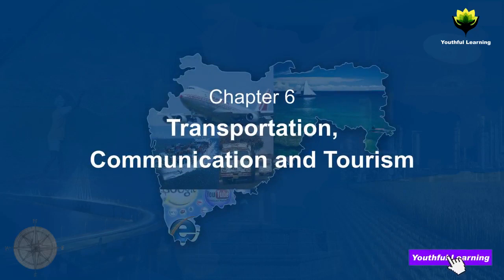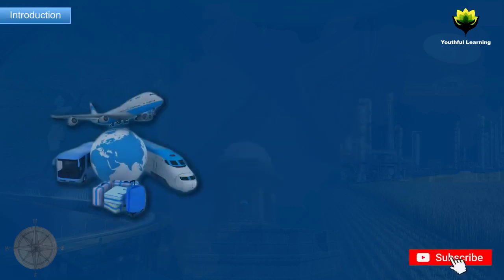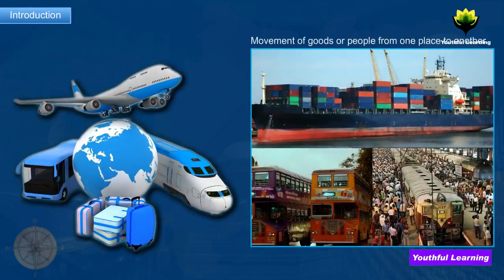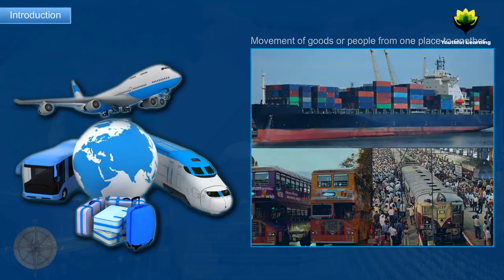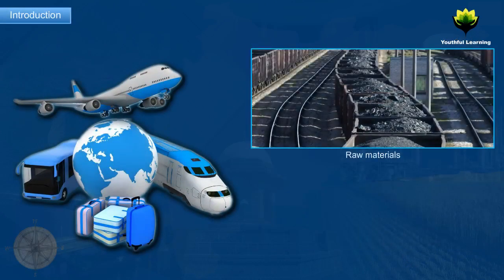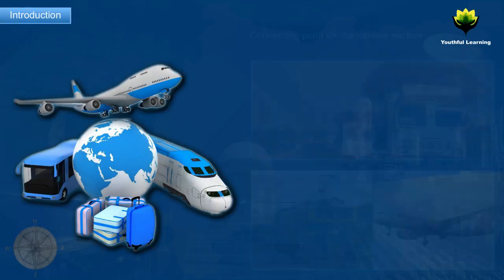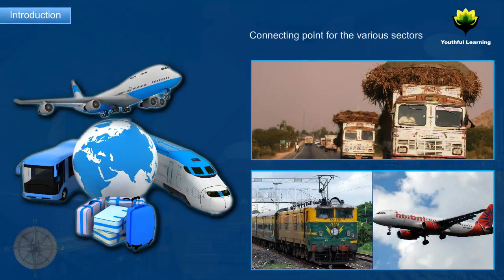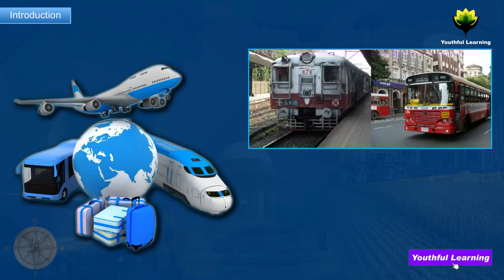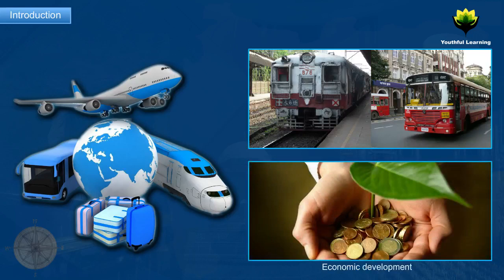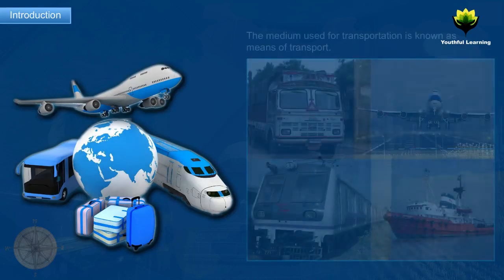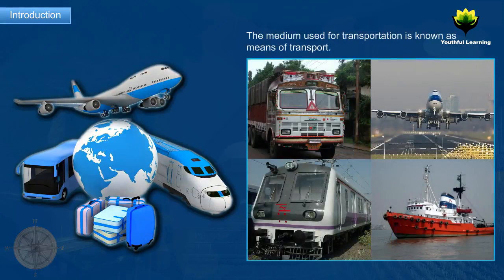Chapter 6: Transportation, Communication and Tourism. Transportation is the movement of goods or people from one place to another. It provides manufacturing companies with the raw materials and consumers with the finished products, thus serving as the connecting point for the various sectors of the state or country. The development of transport facilities in an area goes hand in hand with the economic development of the area. The medium used for transportation is known as means of transport.